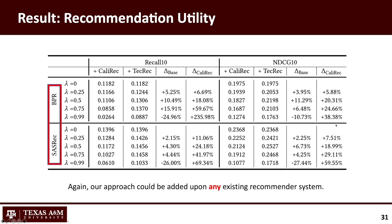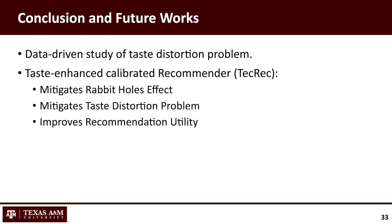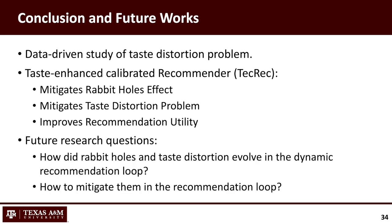In summary, our proposed method breaks the stereotype that distribution matching and recommendation utility must be a trade-off, and provides much more accurate recommendations with the predicted taste distribution. In this paper, we first analyzed the taste distortion problem through a data-driven study, and introduced our approach which mitigates both rabbit holes and taste distortion simultaneously, improving utility over both accuracy-driven and distribution-aware recommenders. In future work, we are interested in analyzing how rabbit holes and taste distortion evolve in the dynamic recommendation loop, and how we can mitigate them during the loop rather than through our current static processing.